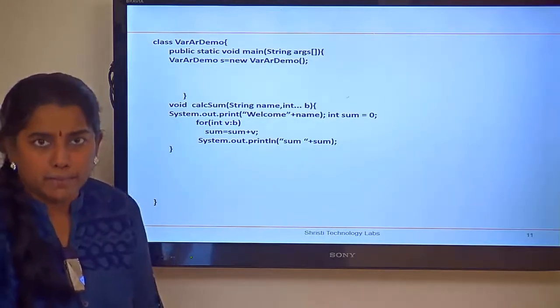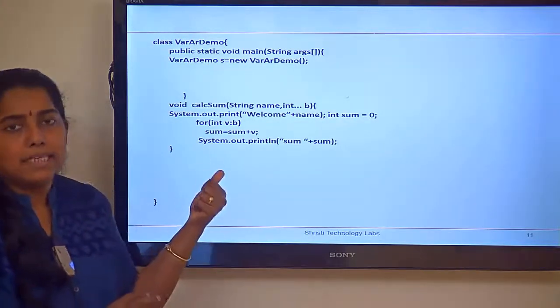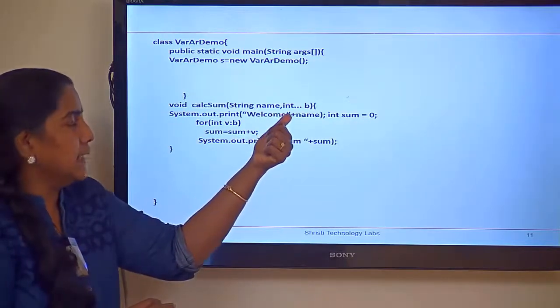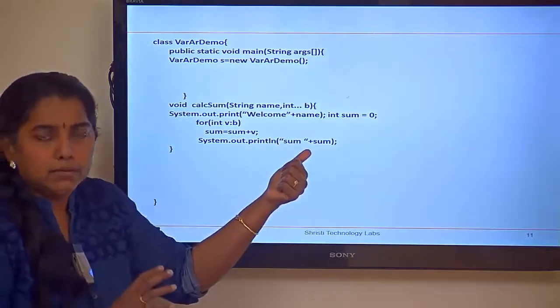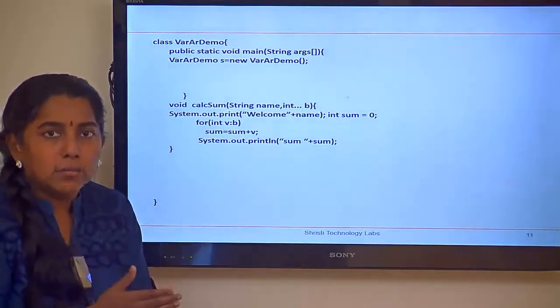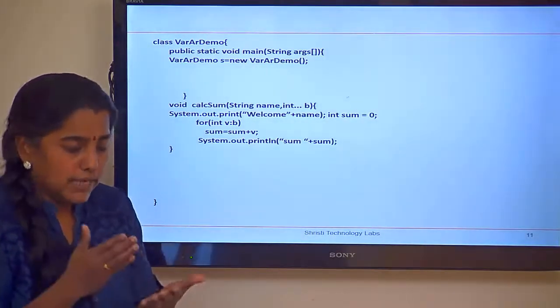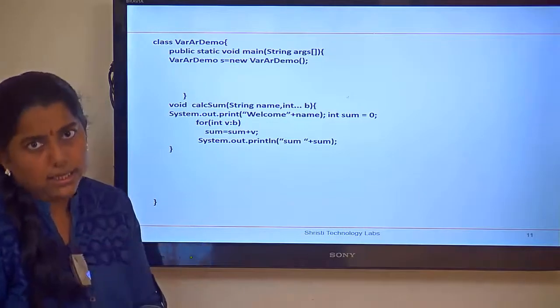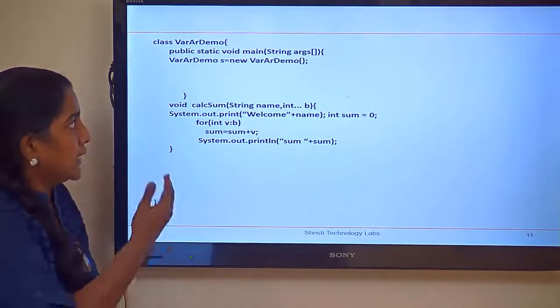This is a simple example for variable argument. I have got a method, calc sum, which is taking a variable argument. The idea over here is, I want to calculate the sum of numbers. The argument list may differ. Starting with 1, 2, or any number.